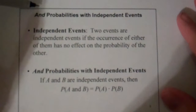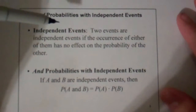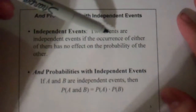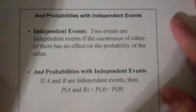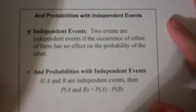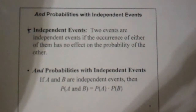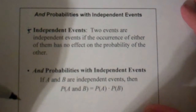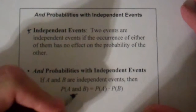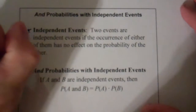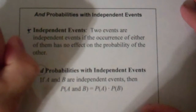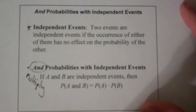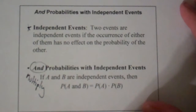AND probabilities with independent events are much easier. With independent events, two events are independent if the occurrence of either of them has no effect on the probability of the other. This is like a little review — it's the idea of mutually exclusive in our ORs. AND probabilities with independent events mean that we are going to multiply them together. Remember: OR was an ADD, and so AND is a multiply.